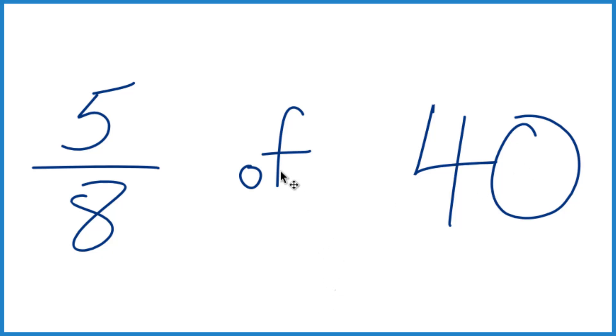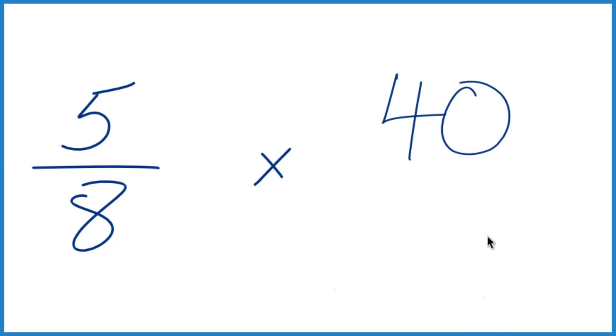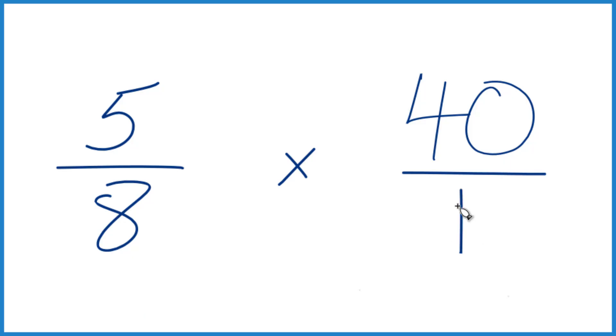Well, the first thing is that you can just call that multiplication, same thing, 5 eighths times 40. And I'm going to make the 40 a little bit smaller here, and then I'm going to call that 40 over 1, because 40 divided by 1, it's still 40